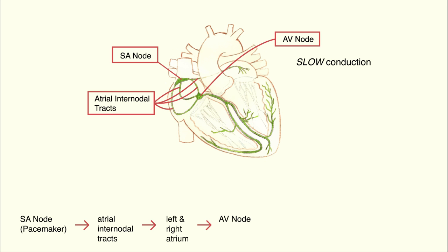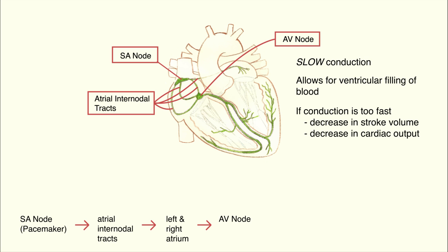Conduction velocity through the AV node is slower than it is in other cardiac tissues. The slow conduction through the AV node ensures that the ventricles have sufficient time to fill with blood before they are activated and contract and eject blood from the heart. If you increase conduction velocity through the AV node, it could lead to decreased cardiac filling and decreased stroke volume and cardiac output.